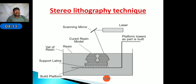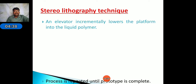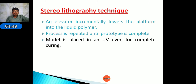First, a layer is created; then the platform moves downward. After that, the second layer is created, and this continues up to n layers until the required prototype shape is obtained. An elevator incrementally lowers the platform into the liquid polymer. This process is repeated until the prototype is completed, and then the model is placed in a UV oven for complete curing.